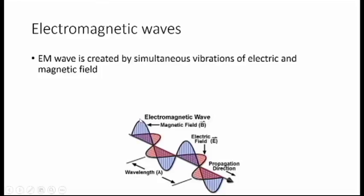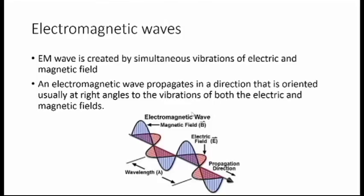These two oscillating energy fields are mutually perpendicular, as seen in the figure. Now it is very important to remember that for convenience, in most illustrations the magnetic field component is purposely omitted. Instead we represent only the electric field to represent an electromagnetic wave.